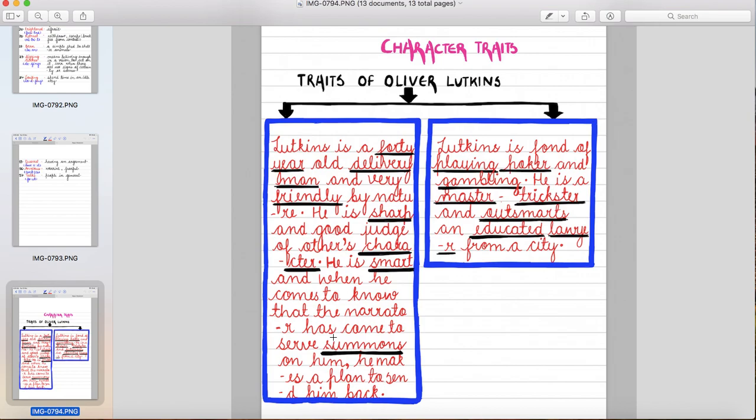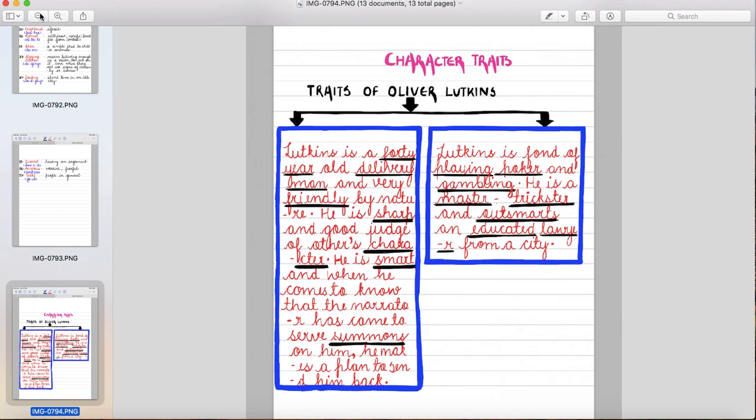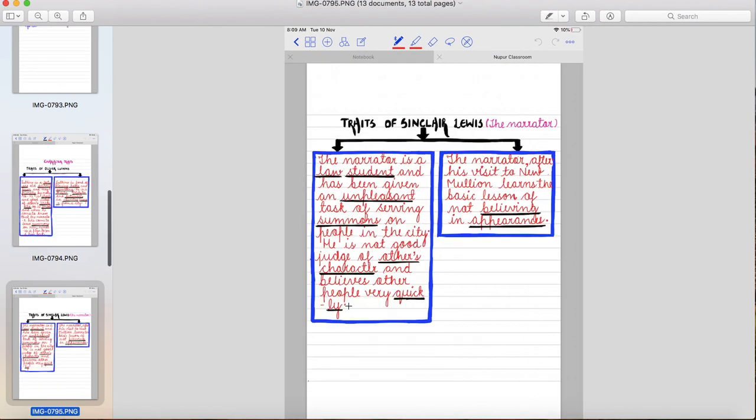So he is shrewd also. Lutkins is fond of playing poker, a kind of card game and gambling. So he is master trickster and outsmarts an educated lawyer from a city. Woh ek educated lawyer ko fool kar deta hai. So these are the character traits of Oliver Lutkins.